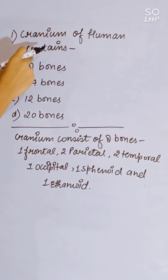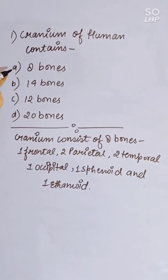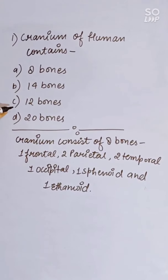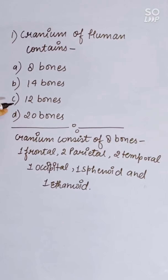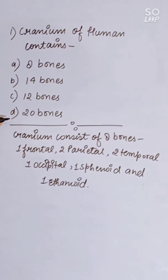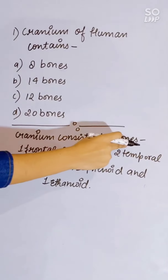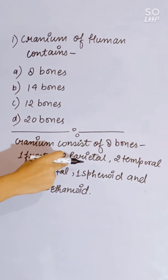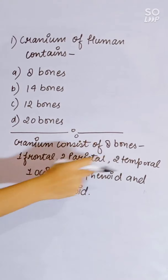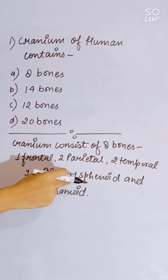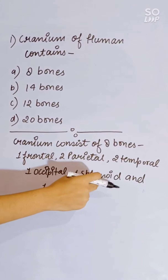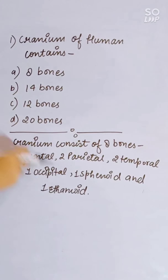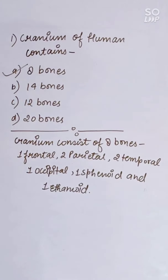The cranium of humans contains how many bones? Options: 8, 14, 12, or 20. The cranium consists of 8 bones: 1 frontal, 2 parietal, 2 temporal, 1 occipital, 1 sphenoid, and 1 ethmoid. Correct answer is A, 8 bones.